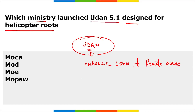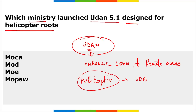Under Udaan 5.1, connectivity to remote areas will be achieved through helicopters. This is the first time the scheme is designed specifically for helicopter routes. It was designed in consultation with all stakeholders, including helicopter operators, to determine better routes and implementation strategies.